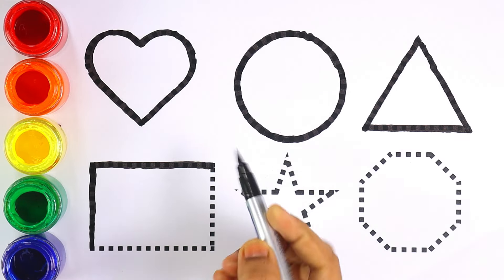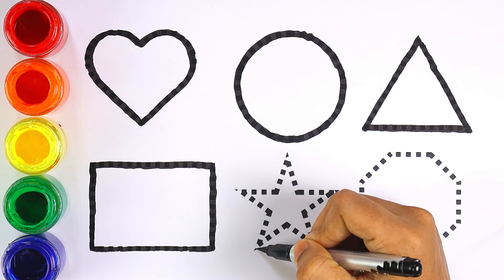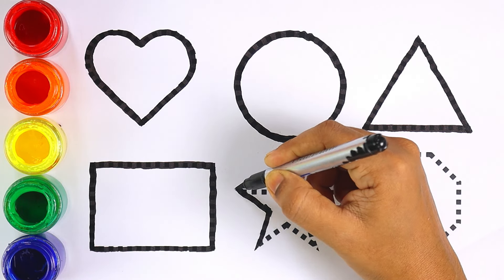Rectangle has got four sides. Which shape is this kids? That's right, rectangle. And you all know which shape it is. Yes, it is star.